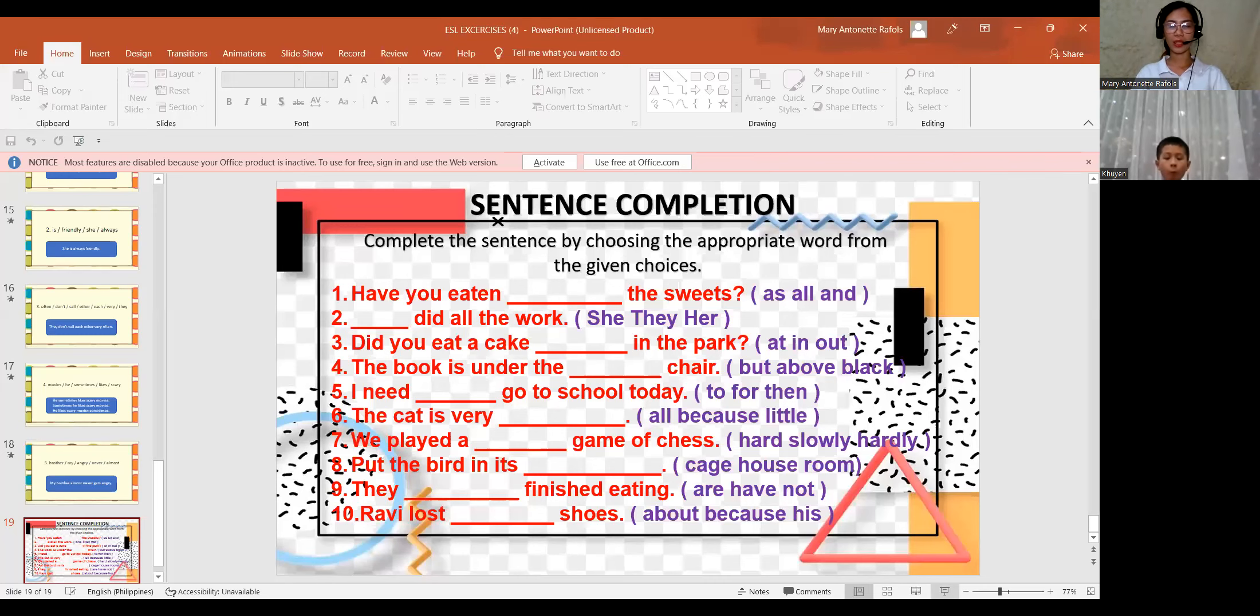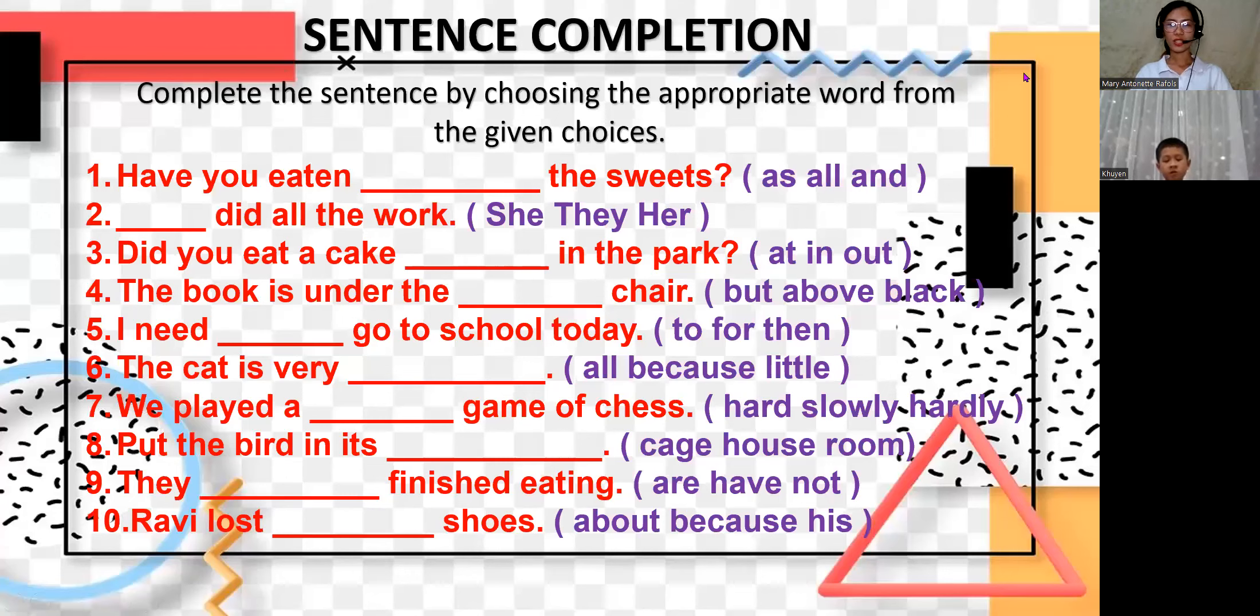Before we go back to the last topic that we had, let's try to answer this one first. In here you need to complete the sentence by choosing the appropriate word from the given choices. The one in violet are the given choices. All you have to do is pick the right word and fill in the blanks to complete the whole sentence.